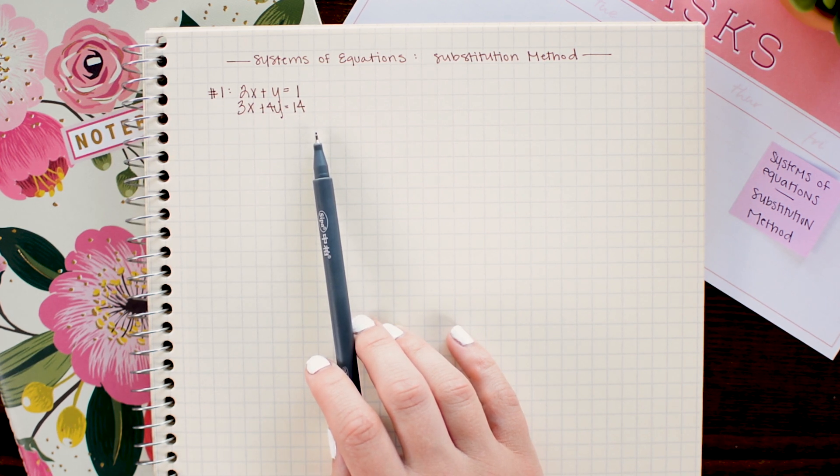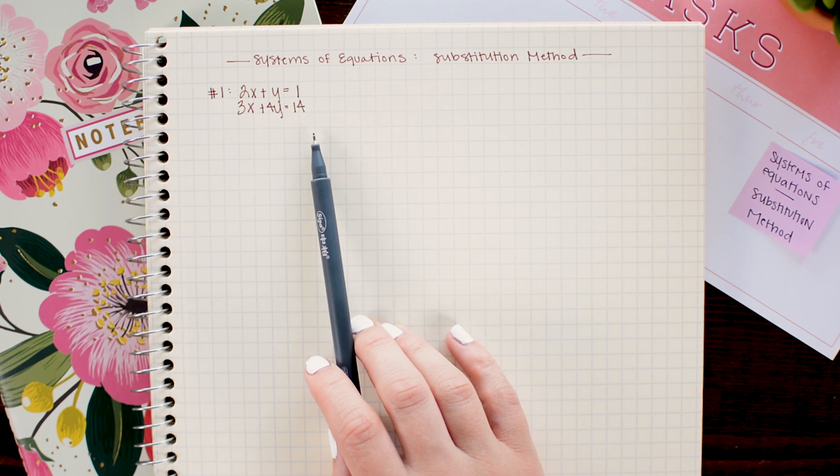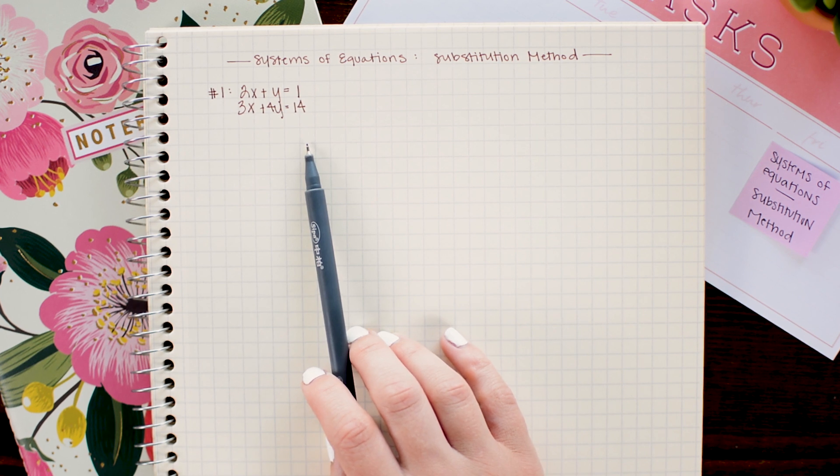Now there are three possible scenarios you can have with a system of linear equations. Most often they are going to intersect in one point, although if they are parallel lines they will never intersect. And if they are really the same line, then they are going to intersect in infinitely many points. If you'd like a recap of those scenarios and exactly what that looks like, check out my tutorial on systems of equations, the graphing method.